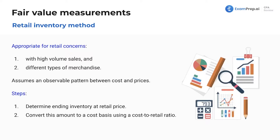Retail inventory method. This is appropriate for retail concerns. If you have high-volume sales and different types of merchandise — like JCPenney or Gap, a big store with lots of different items — we assume an observable pattern between cost and prices.